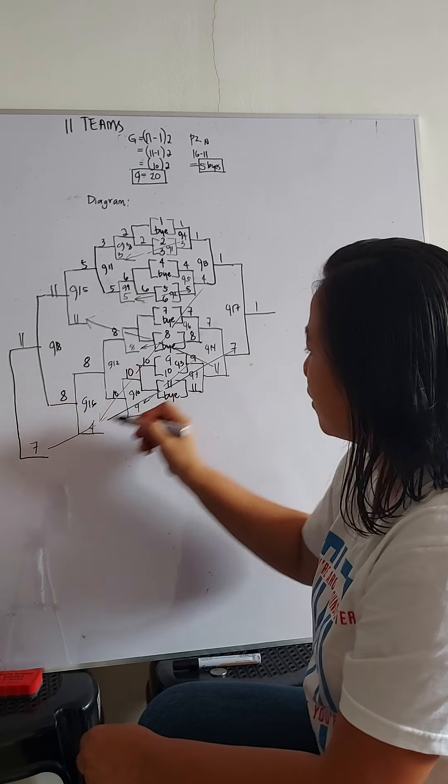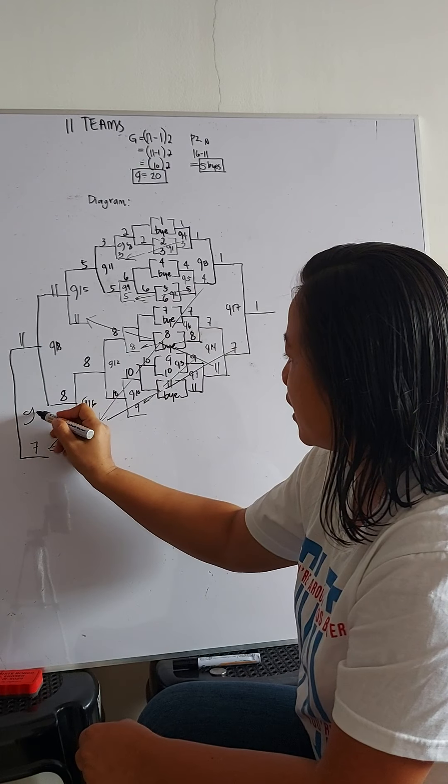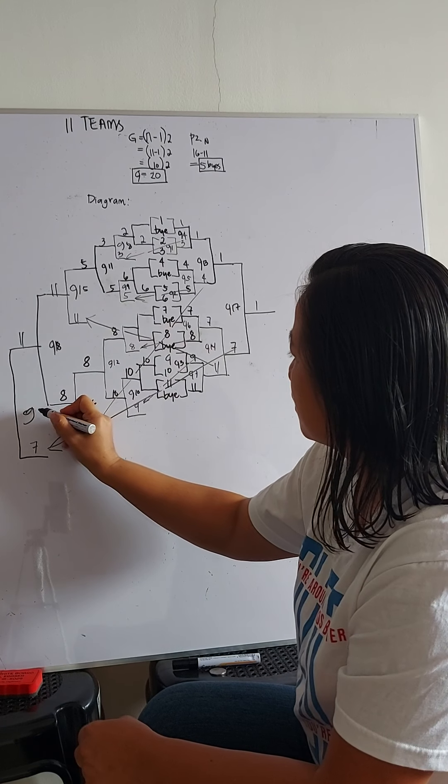And that's team 7. So, broken arrow. So, this is our game 19.